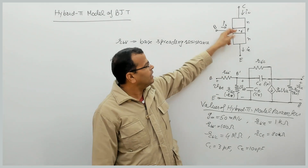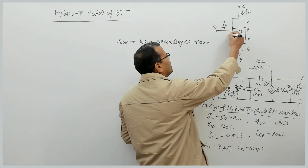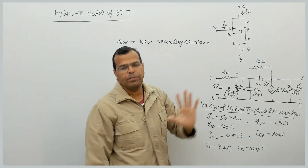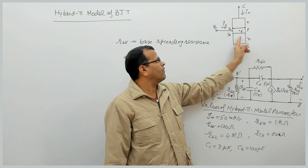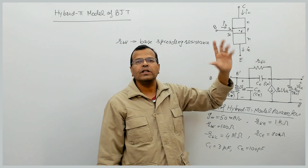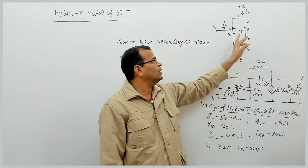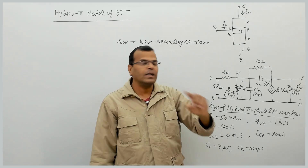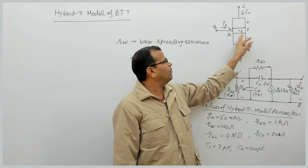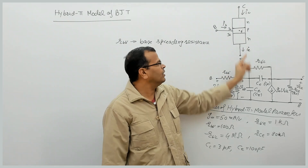Between terminal B' and emitter, we have the emitter junction. This emitter junction will offer some capacitance — it has two components: diffusion capacitance and depletion layer (transition) capacitance. That capacitance is denoted CE, or in some textbooks Cπ. So between B' and E, we have capacitance CE because of the emitter junction.